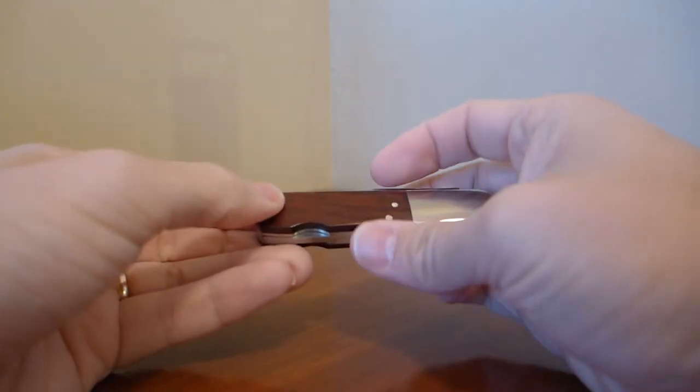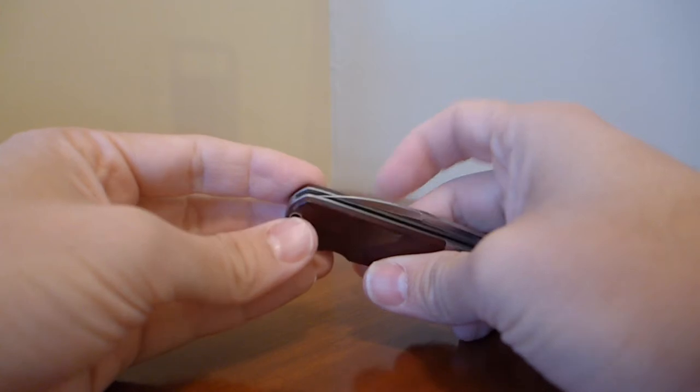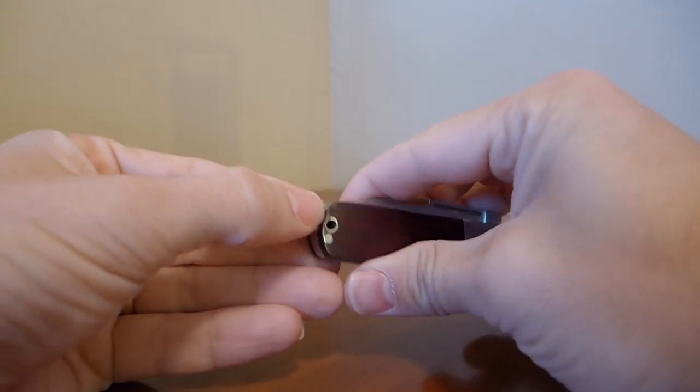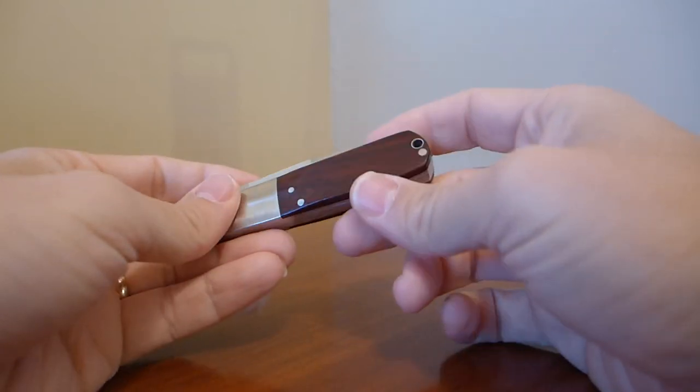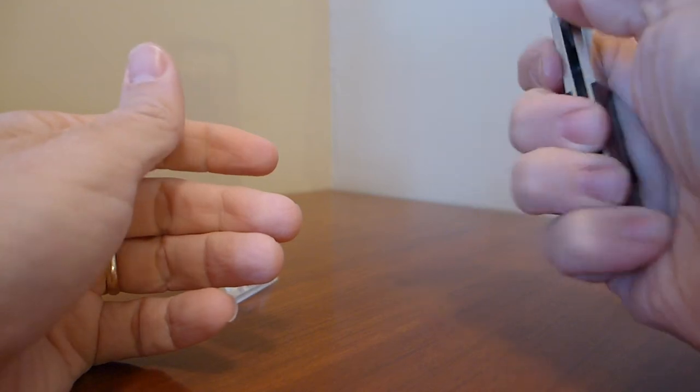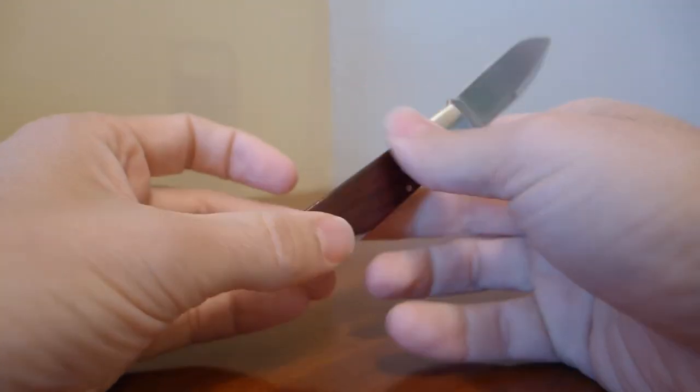Cocobolo is a nice material, but it is not as tough as G10. One of the things that's happened since I've started carrying this knife, I've got this little nick in the bottom. That's okay. It doesn't really bother me. It doesn't affect performance, and it'll just give the knife a little bit of character.